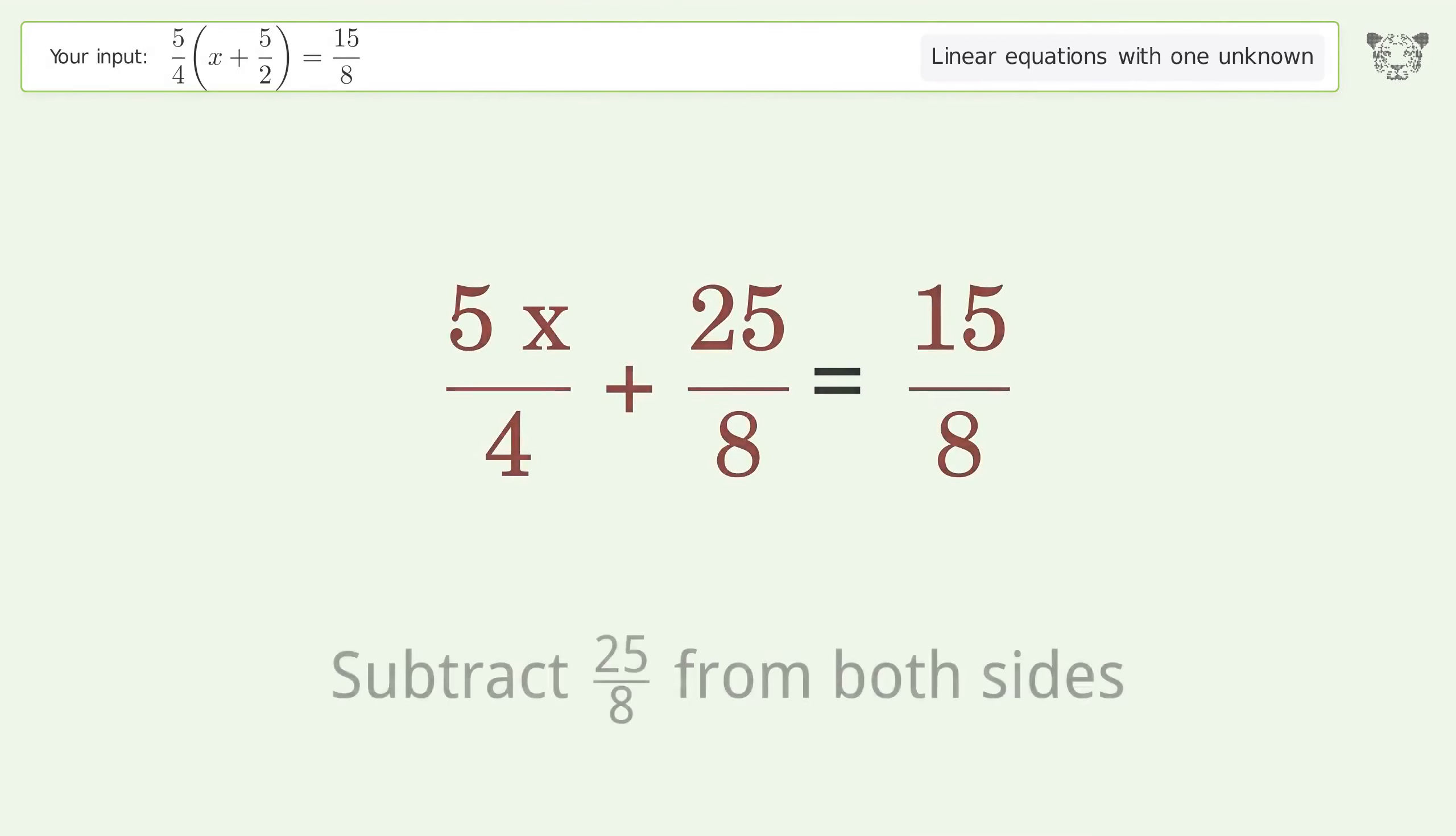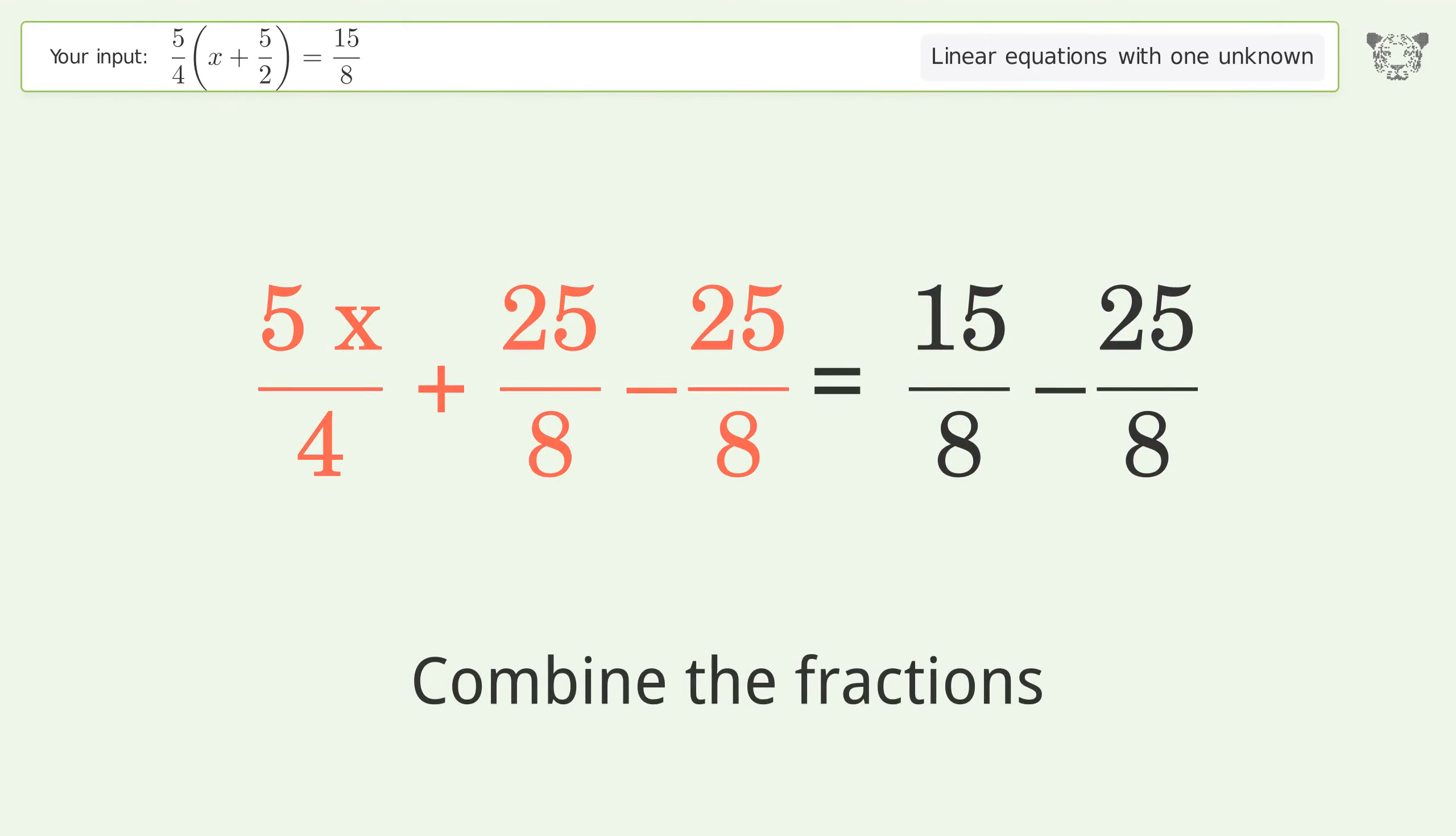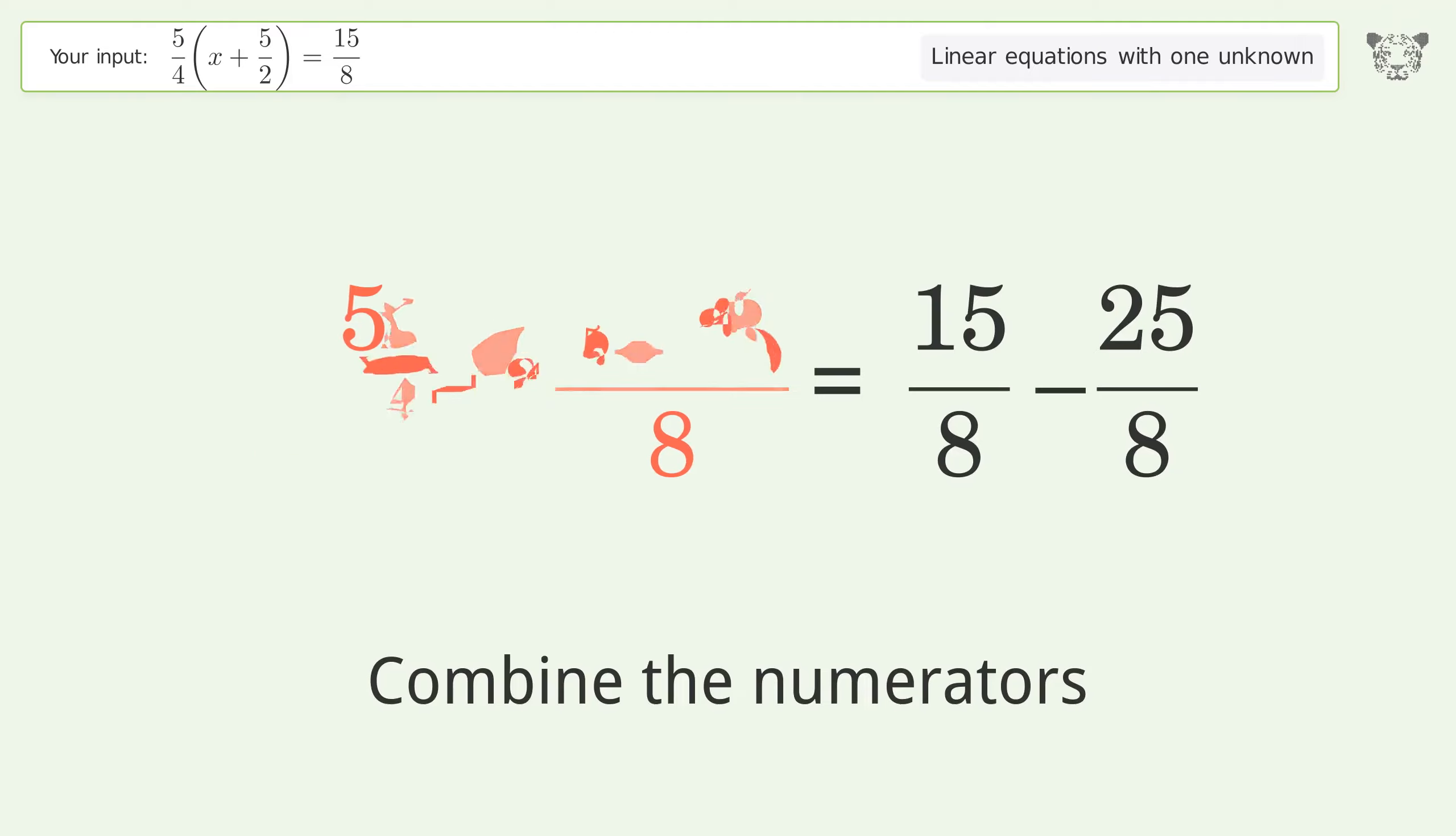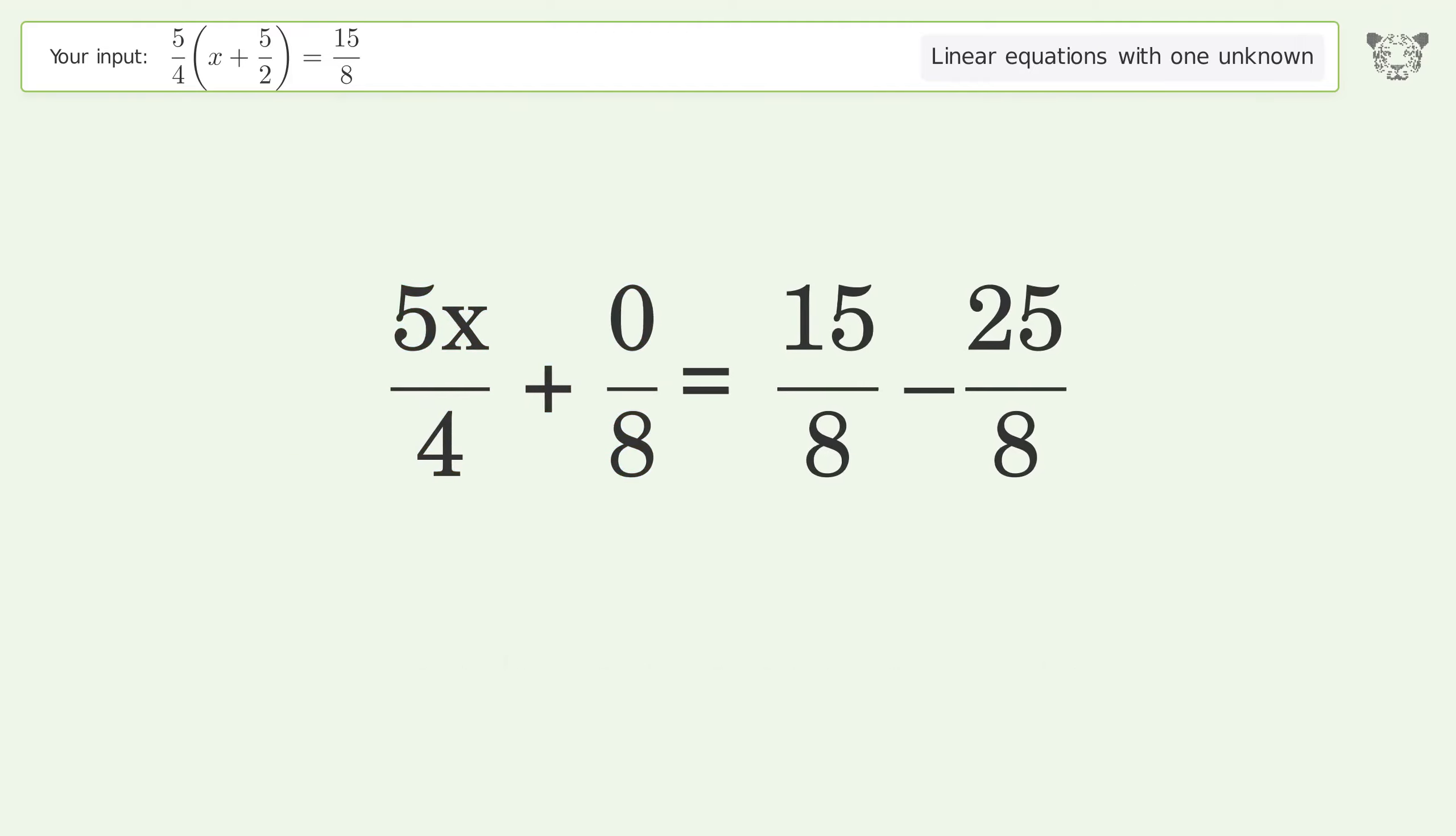Group all constants on the right side of the equation. Subtract 25 over 8 from both sides. Combine the fractions. Combine the numerators.